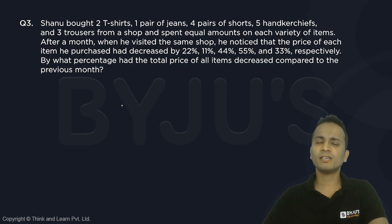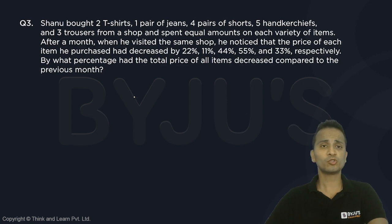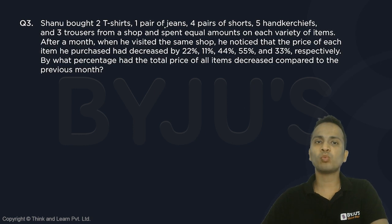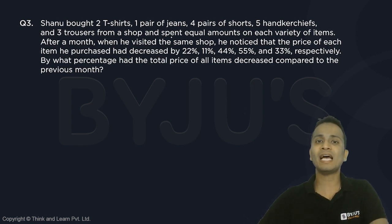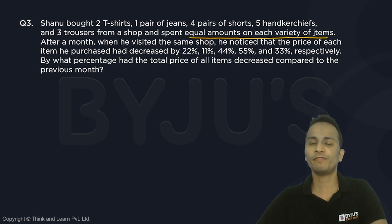Question number three is an easy question — you all should be able to do this one. Read the statements carefully. Chano bought two T-shirts, one pair of jeans, four pairs of shorts, five handkerchiefs, and three trousers from the shop and spent an equal amount on each variety of items.